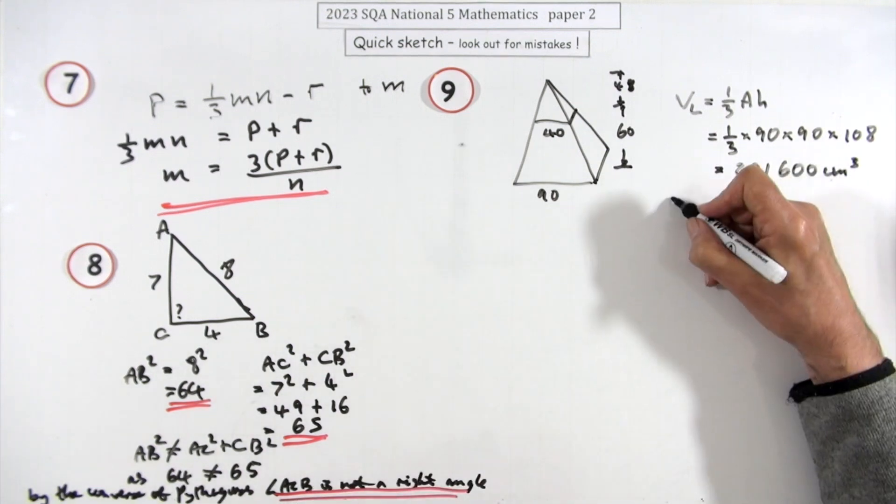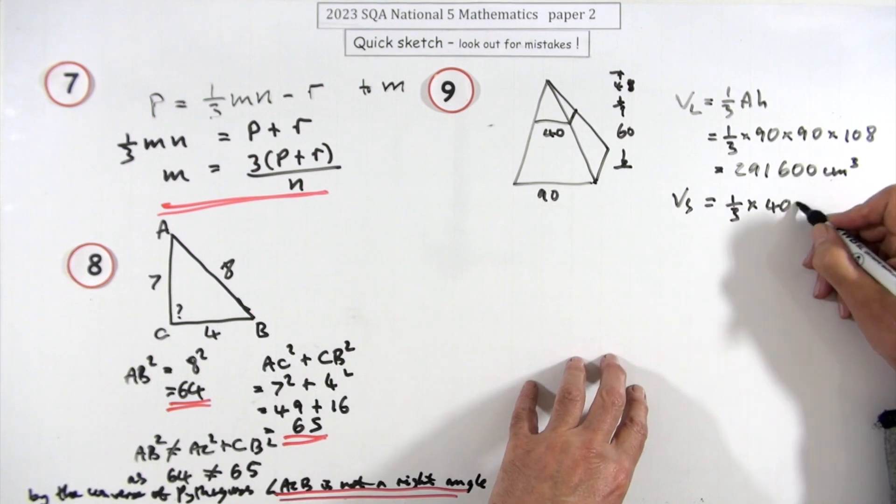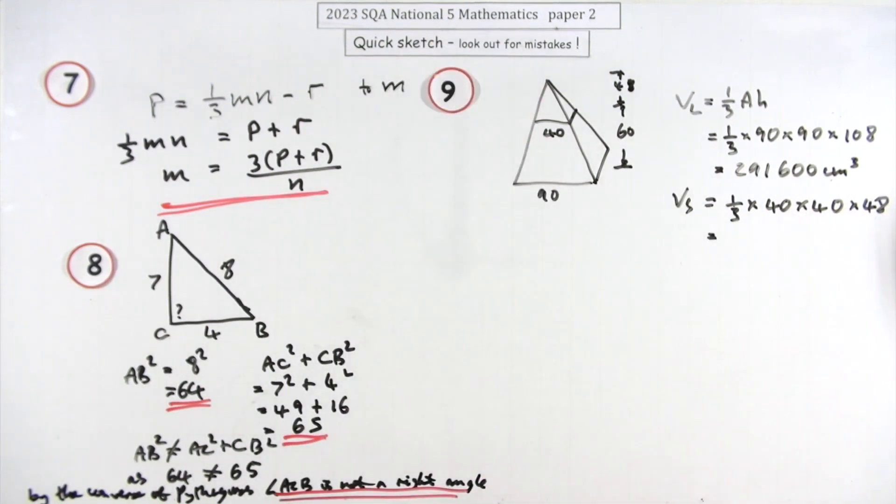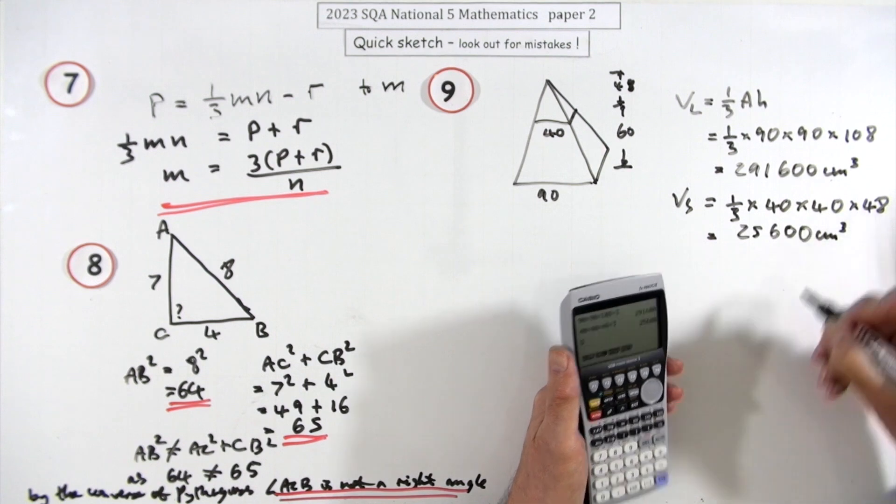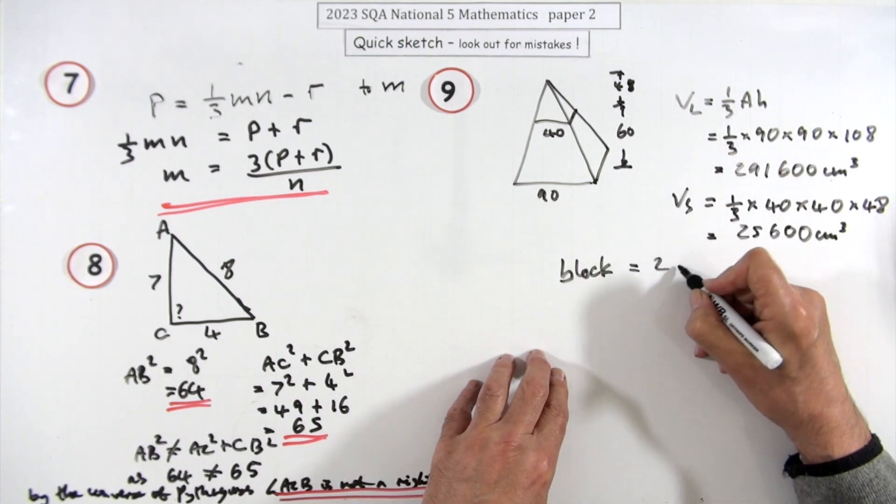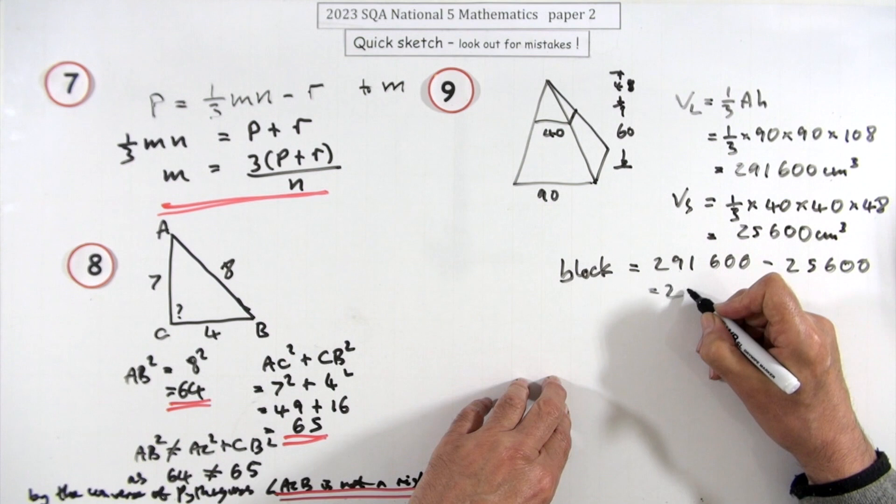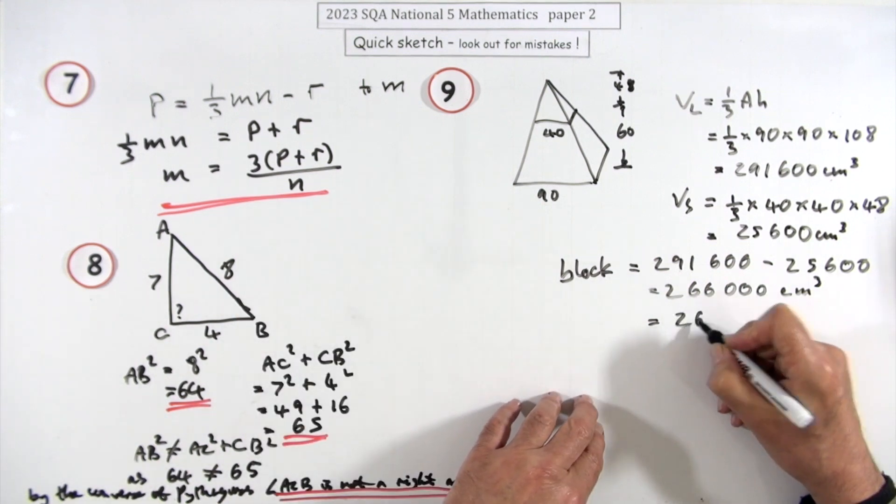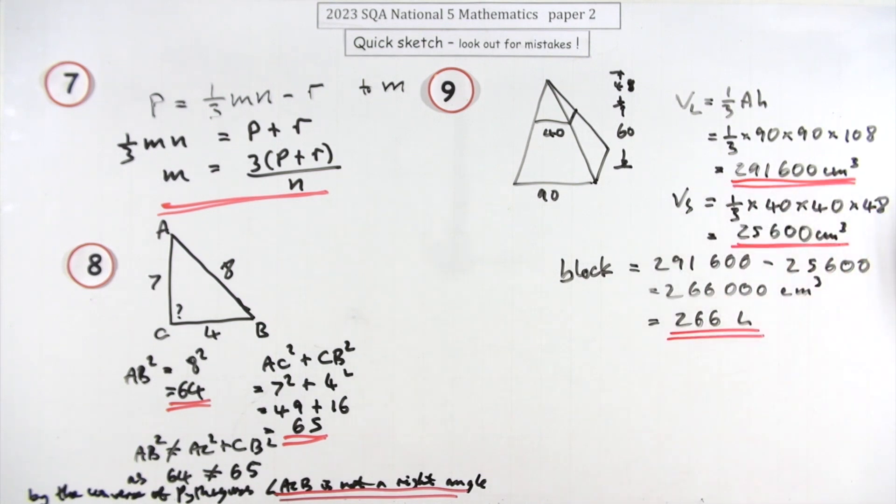At least there's no rounding off needed here. Volume of the small one, that's just identically set out. Only it's 40 this time, 40 by 40, and its height is only the 48. So that gives you 25,600 cm³. Which means for the block, it's going to be the difference between the two: 291,600 minus 25,600. So that'll be 266,000 cm³, which may well do for the answer, or 266 liters.